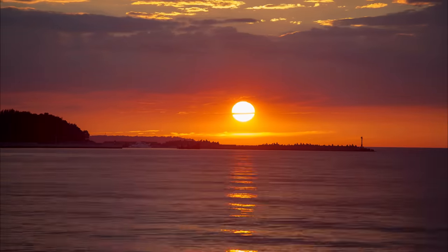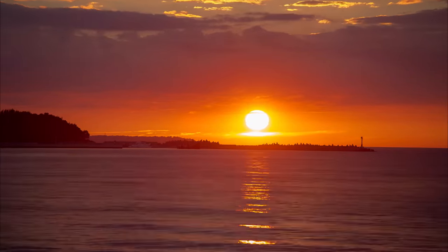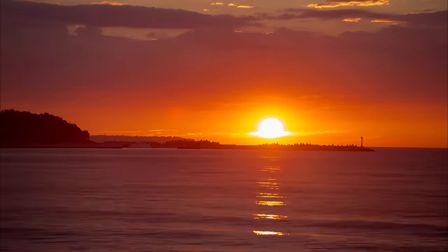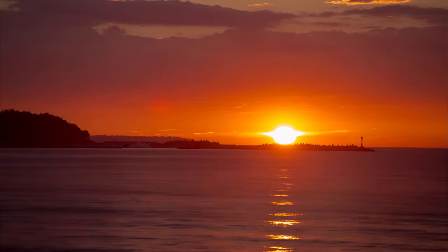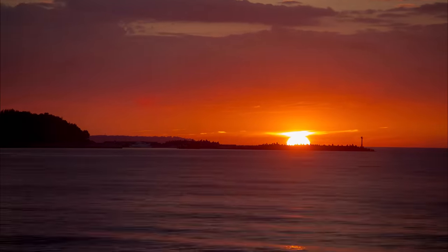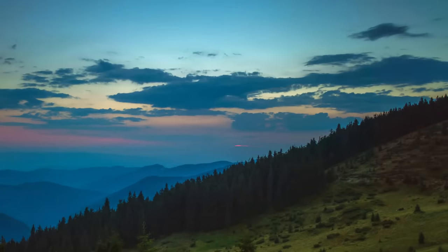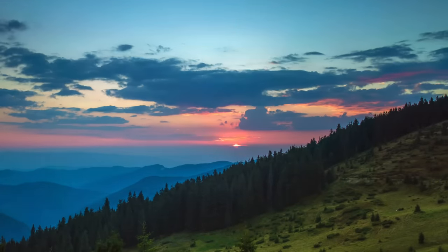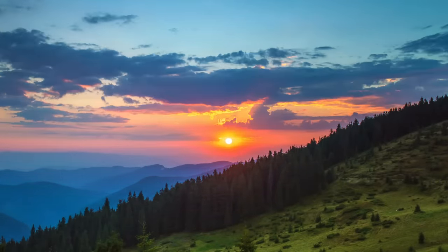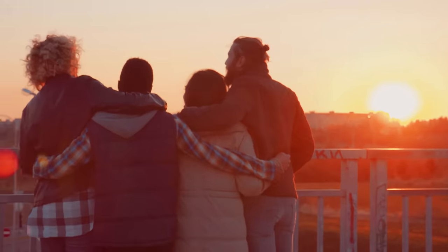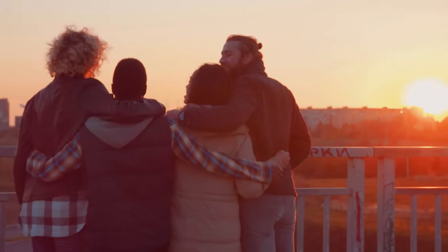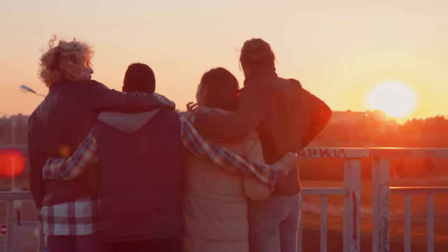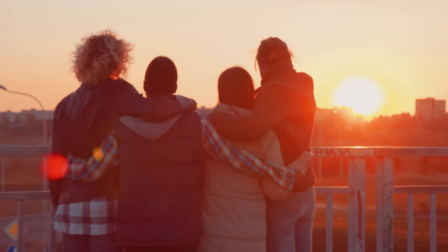But this also means that during sunrise and sunset, when the sun is lower in the sky, the sunlight has to travel through more of our atmosphere, making it more likely to encounter these tiny particles and scatter more of these shorter wavelengths, giving us those amazing hues of oranges, pinks, and purples. So there you have it. Next time you see a dazzling sunrise or sunset, you can impress your friends with your knowledge of Rayleigh scattering.